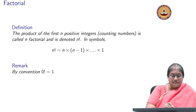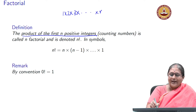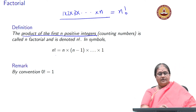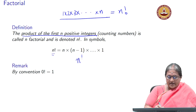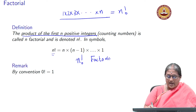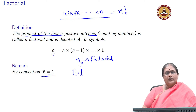What is the factorial notation? Factorial notation is the product of the first n positive integers: 1 × 2 × 3 up to n. This product is what I refer to as n factorial. The notation is n with an exclamation mark, written as n!. By convention, 0 factorial is equal to 1, and 1 factorial is also equal to 1.